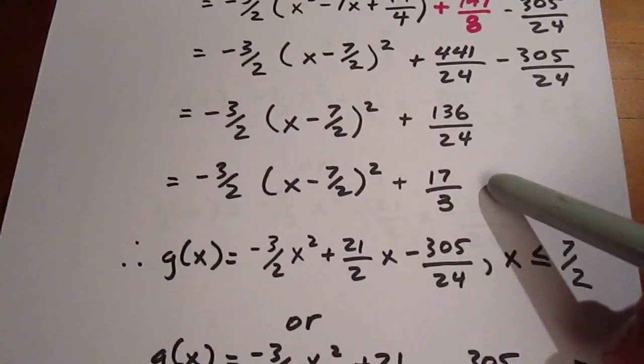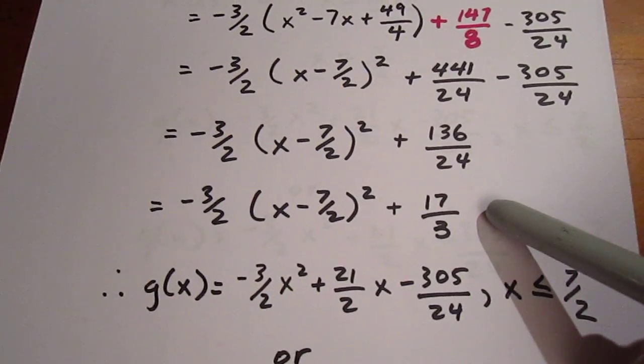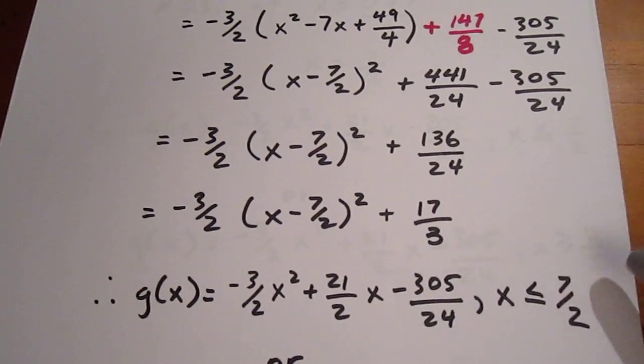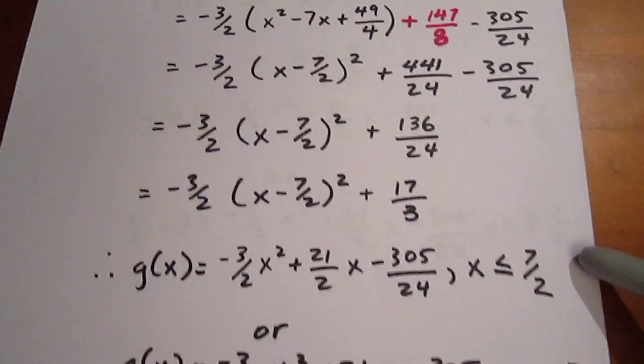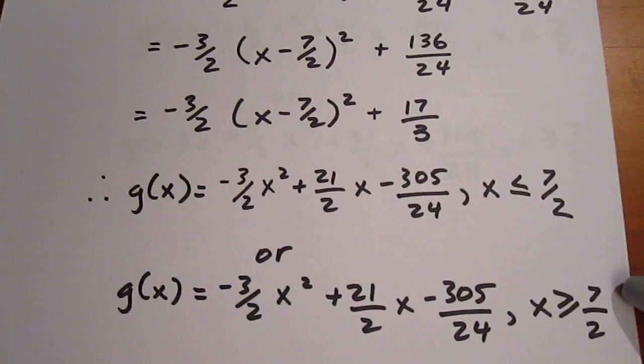And then we could say that the function statement with the restricted domain would either be x less than or equal to 7 halves or x greater than or equal to 7 halves.